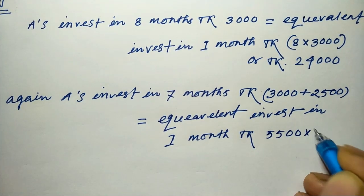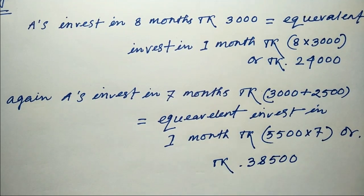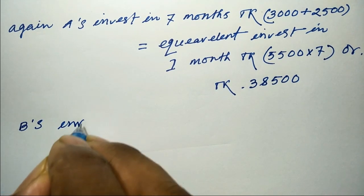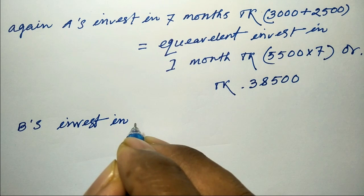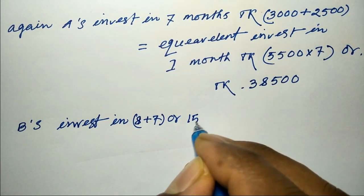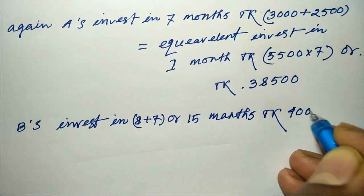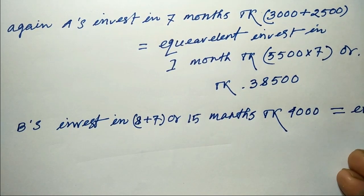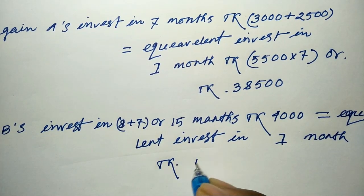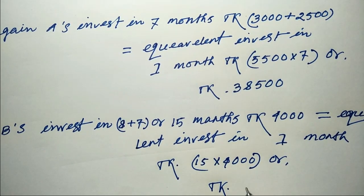Taka into seven months gives one part of A's equivalent investment. For B's share: B invests for seven months and eight months, total fifteen months, at Taka 4000. Equivalent investment in one month equals fifteen months times four thousand, giving Taka 60000.